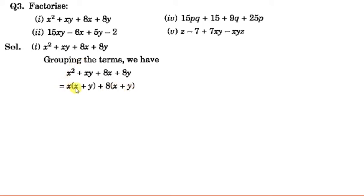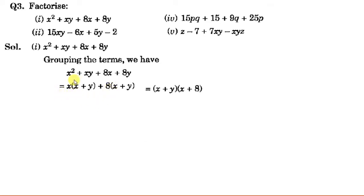Now we can see that our expression has become 2 terms, and in both terms (x + y) is common. So we take (x + y) common: from the first term x remains, and from the second term 8 remains. So the factors are (x + y)(x + 8).